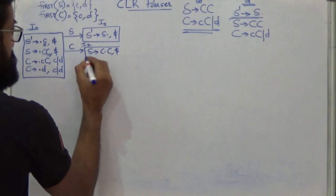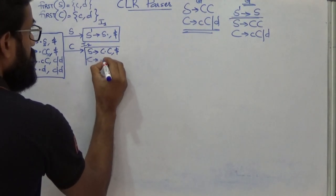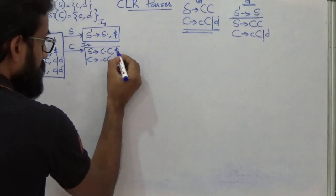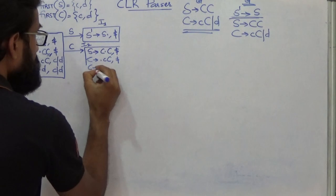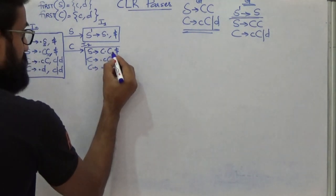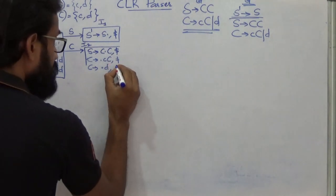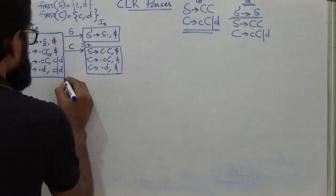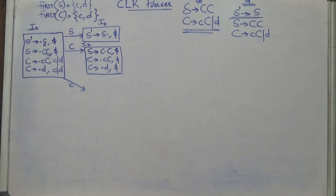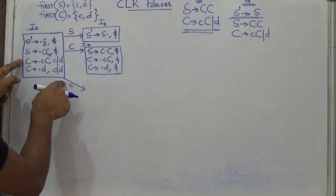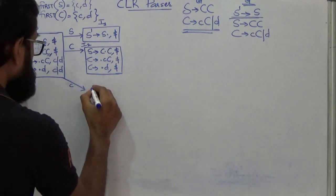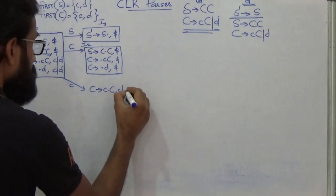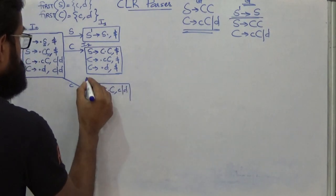From I2, applying transition for non-terminal C gives the item C giving C dot C with lookahead dollar. Since dot is followed by non-terminal C, take the closure: add C giving dot CC with lookahead {c, d}, and C giving dot D with lookahead {c, d}. These lookaheads are computed as FIRST of epsilon concatenated with C and FIRST of epsilon concatenated with D respectively. Let this be item set I3. Now applying D transition from I2 gives C giving D dot with lookahead dollar. Closure remains same. Let this be item set I4.